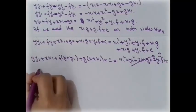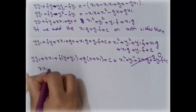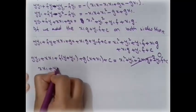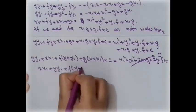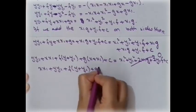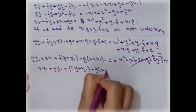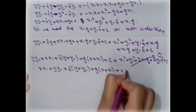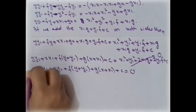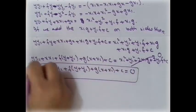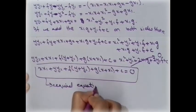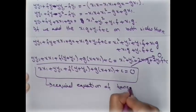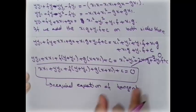The required equation of the tangent is: xx1 + yy1 + f(y + y1) + g(x + x1) + c = 0. This is the standard equation of the tangent to the general circle x² + y² + 2gx + 2fy + c = 0 at the point (x1, y1).